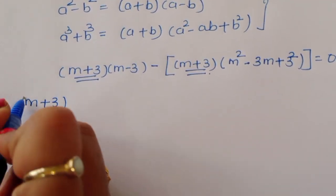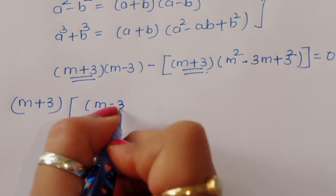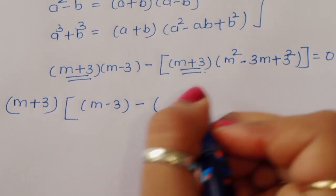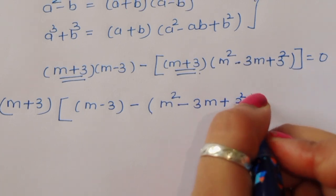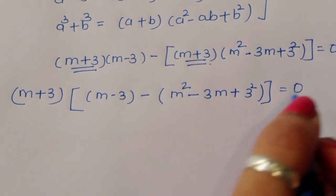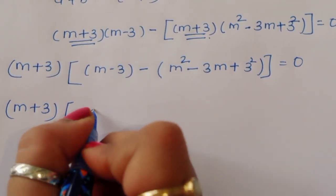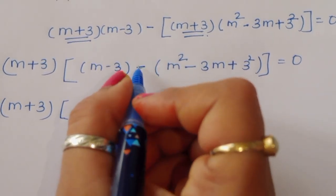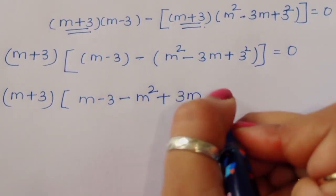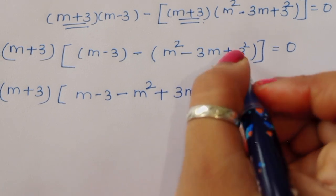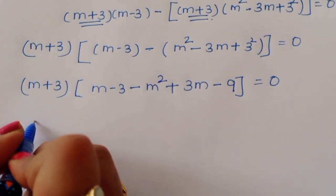So taking (m plus 3) as common, we get (m plus 3) times [(m minus 3) minus (m squared minus 3m plus 9)] is equal to 0. Now opening the bracket: m minus 3 minus m squared plus 3m minus 9 is equal to 0.